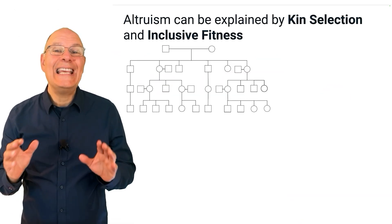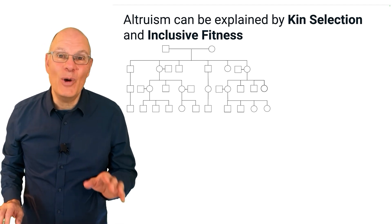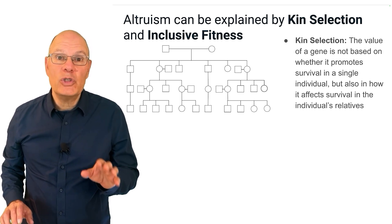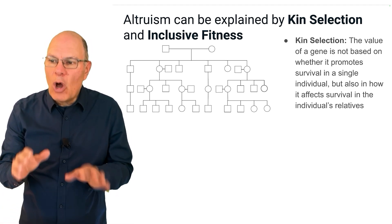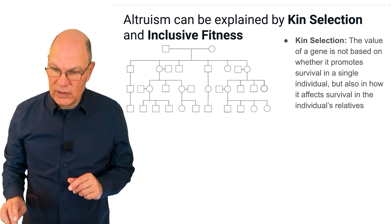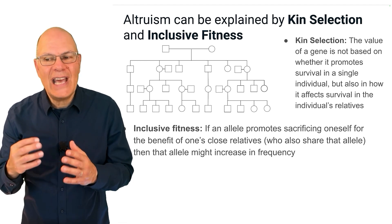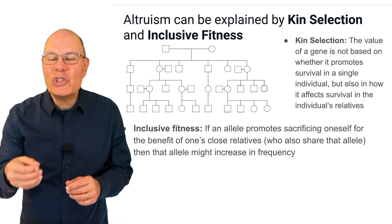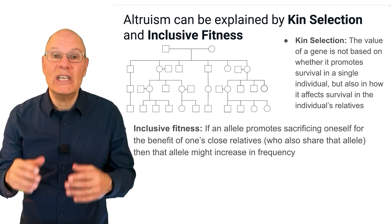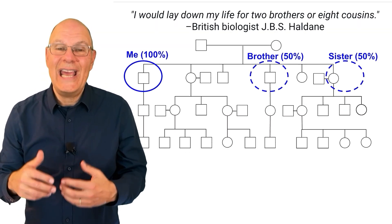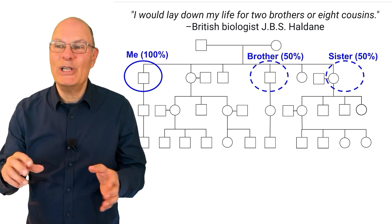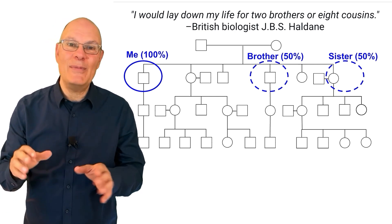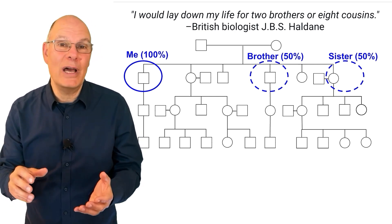Altruism can be explained by kin selection and inclusive fitness. Kin selection means that the value of a gene is not based on whether it promotes survival in a single individual, but also in how it affects survival in the individual's relatives. Inclusive fitness means that if an allele promotes sacrificing oneself for the benefit of one's close relatives who also share that allele, then that allele might increase in frequency. The idea of kin selection and inclusive fitness was cleverly captured by the British biologist JBS Haldane, a very important evolutionary thinker of the 1900s, who famously said, "I would lay down my life for two brothers or eight cousins."